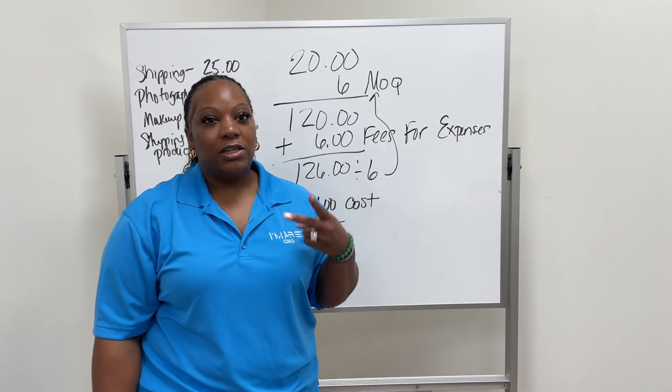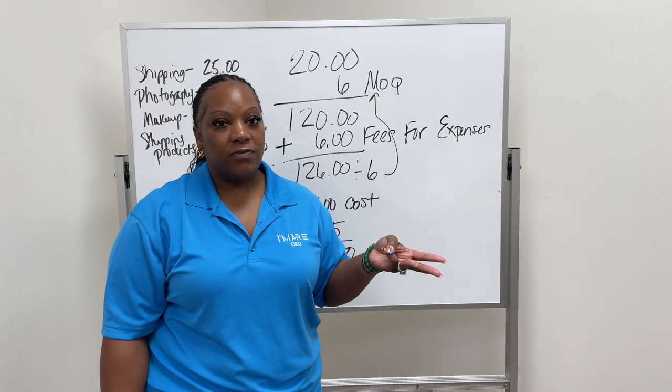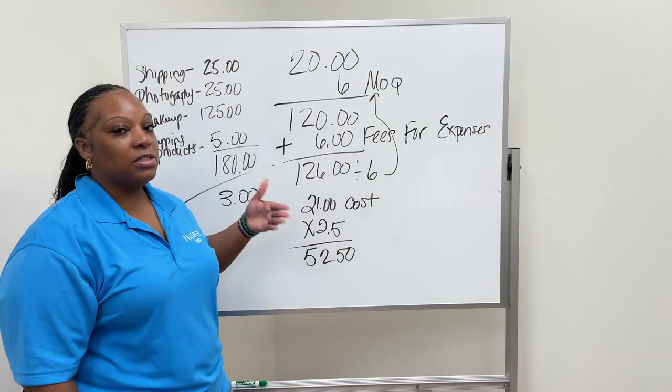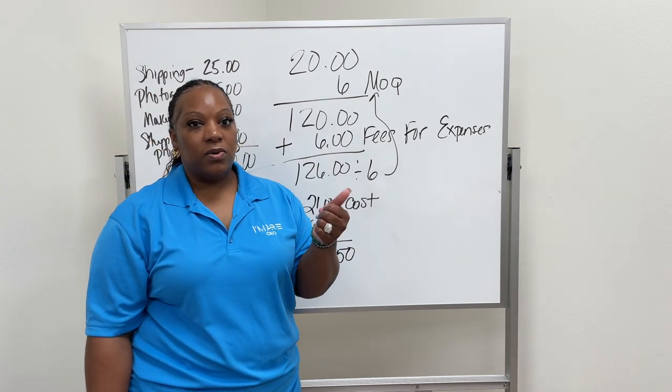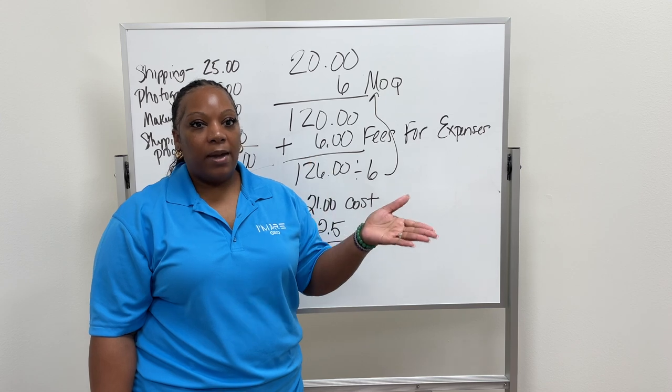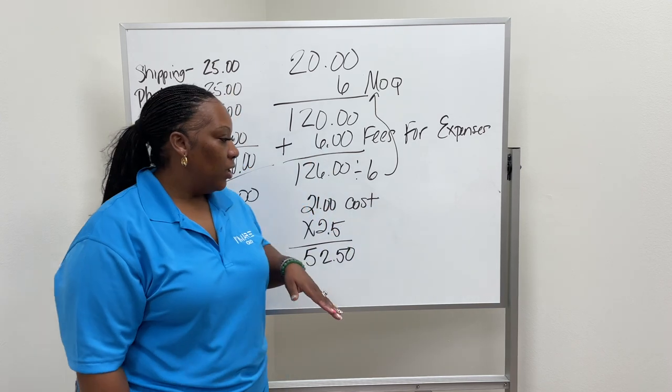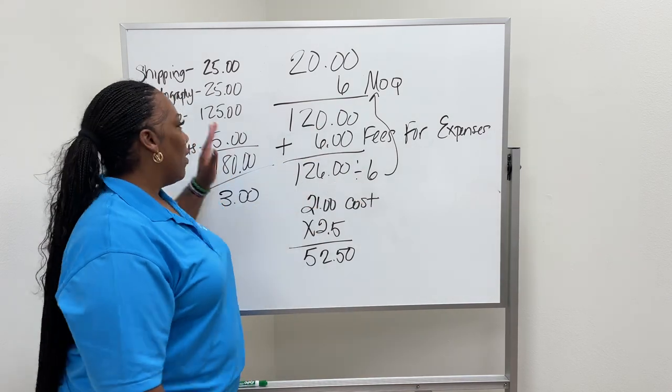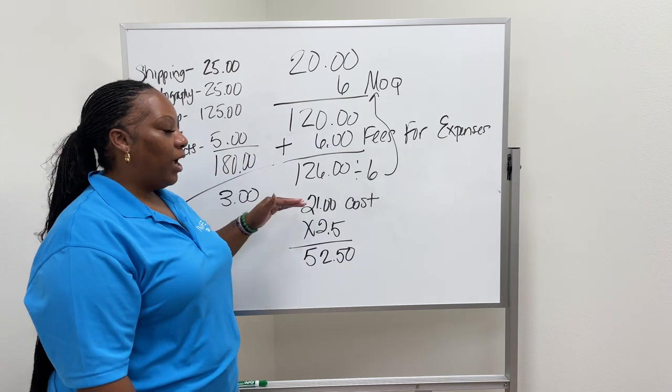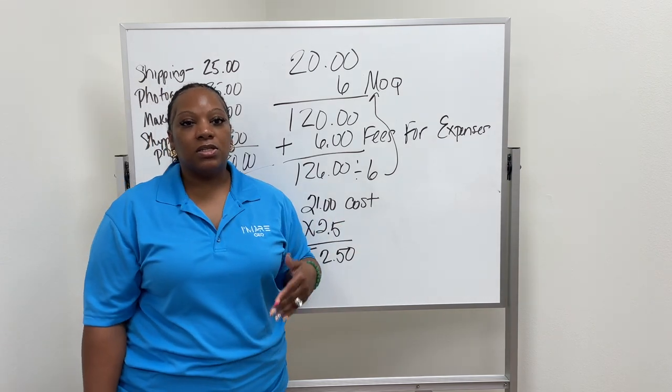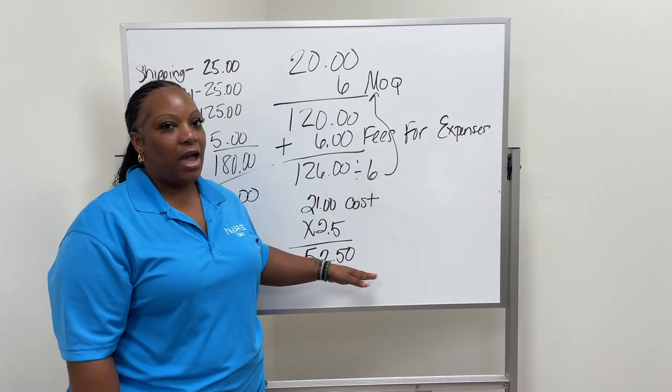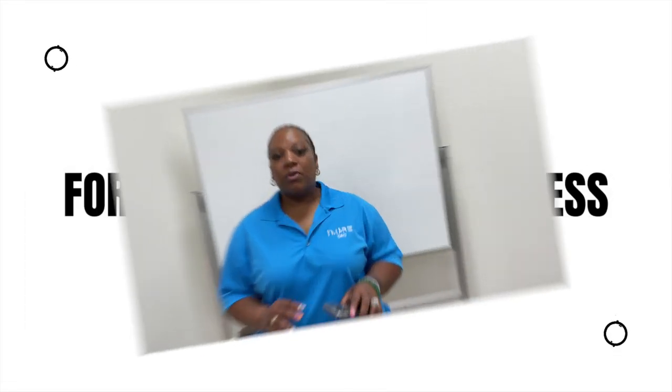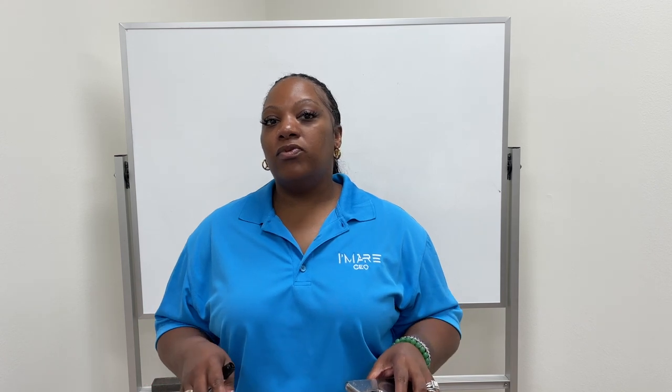Because think about this: Shopify charges fees, the credit card company charges fees, PayPal charges fees. So you want to make sure that when you get to this final number that you think about all those different fees, especially if your website is taking Sezzle, Afterpay, Quadpay. All of those fees add up. So you still want to make sure that you're at least getting back to the $52.50 to take care of the inventory, take care of all of the expenses and everything, so that you're not losing money. Because we're in business to make money, but if you're going to just price it at half, you won't be in business long because you have to stay profitable.